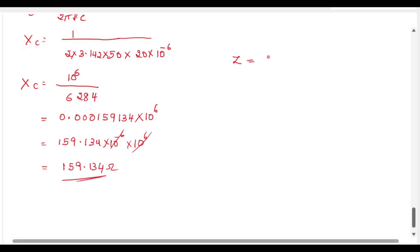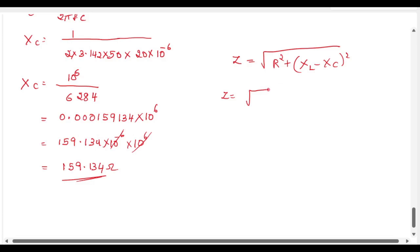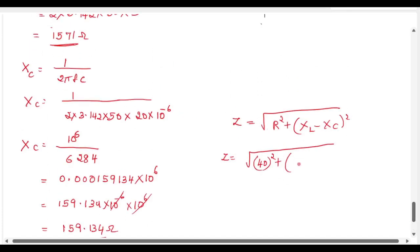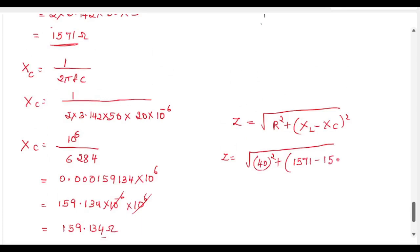Now let us find the value of impedance Z. Impedance Z equal to root of R square plus XL minus XC the whole square. We know the value of resistance R is 40, so 40 square, plus XL value we just got, that is 157.1 minus XC value 159.134, the whole square.